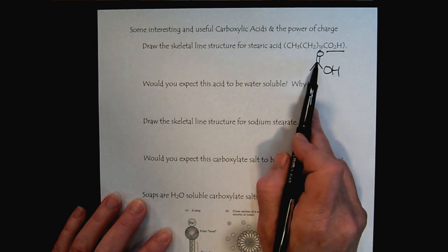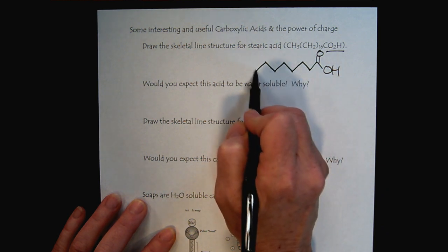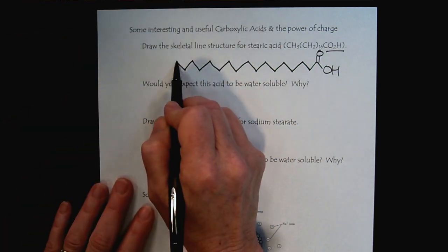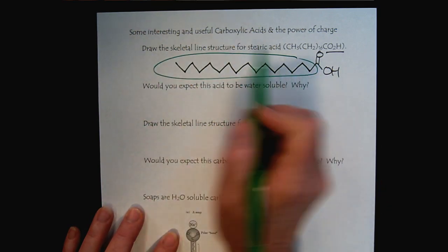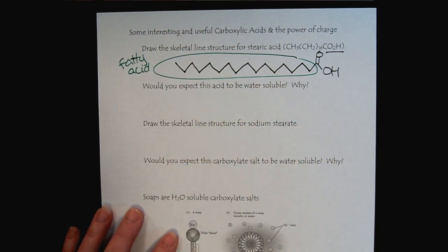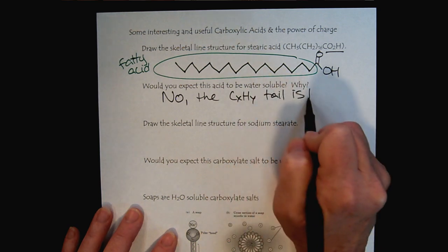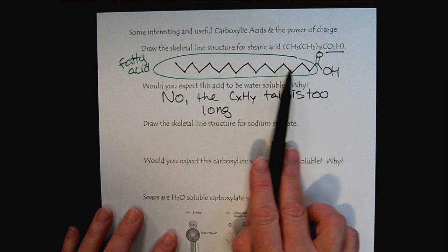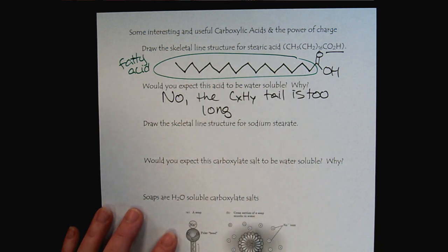So the first carbon is here, carbon one. This would be carbon two, three, four, five, six, seven, eight, nine, ten, eleven, twelve, thirteen, fourteen, fifteen, sixteen. And then we'd have the methyl group at the end. So here is the bond line structure for stearic acid. We would describe this as an example of a fatty acid. So would we expect stearic acid to be water soluble? No. The hydrocarbon tail is too long. Remember our four to six rule. If we have a polar functional group, it can help four to six non-polar carbons to be water soluble. But once we have 17 carbons, it's much too long.